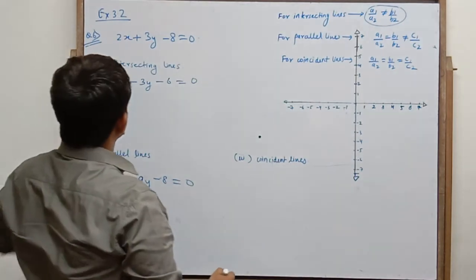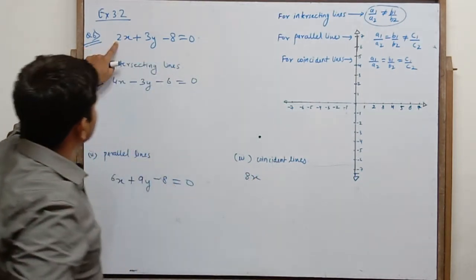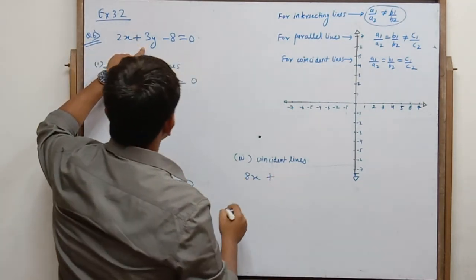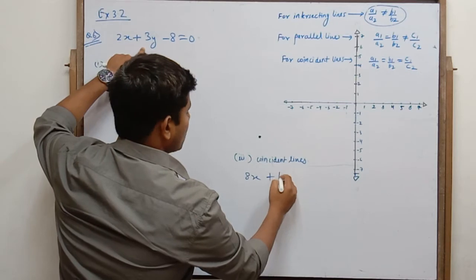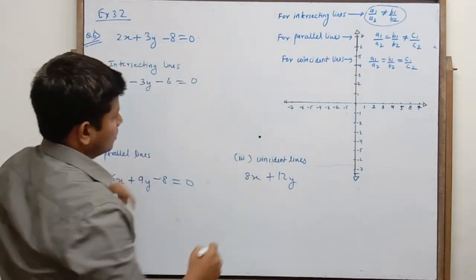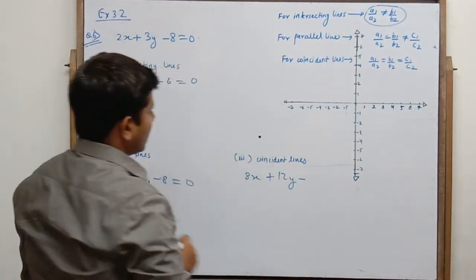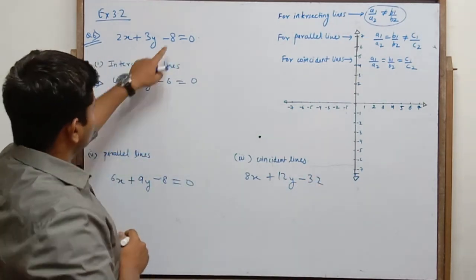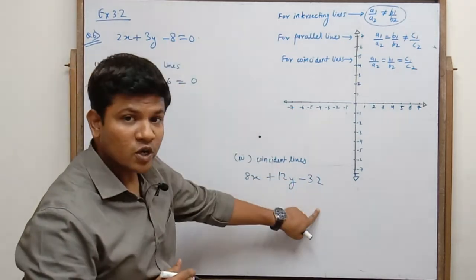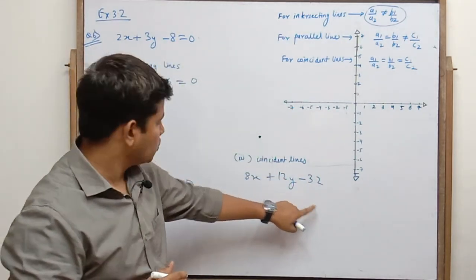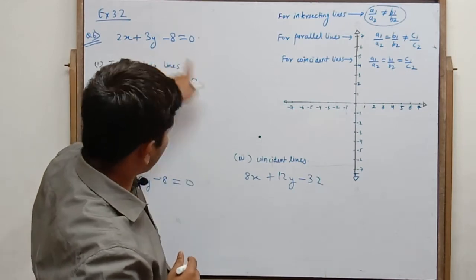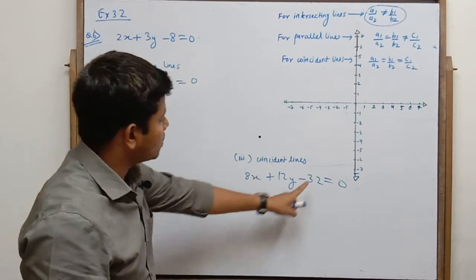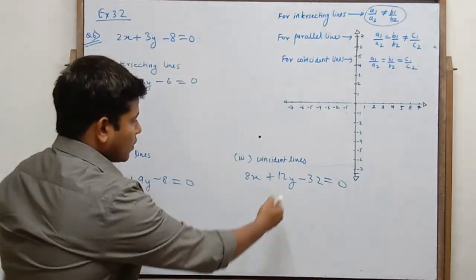अब coincident के लिए equation लिखते हैं। यहाँ 4 से multiply करते हैं: 8x. तो 2/8 = 1/4. Plus 12y. तो 3/12 = 1/4. And minus 32. तो −8/(−32) = 1/4. इसका भी ratio 1/4, इसका भी ratio 1/4, और इसका भी ratio 1/4 is equal to 0. तो यह coincident line के equation हैं।